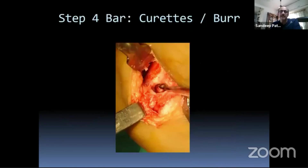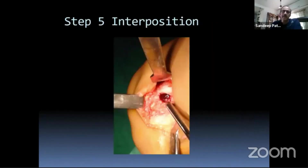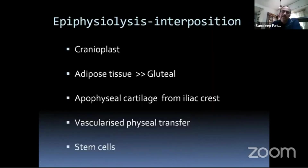A dental mirror, an arthroscope, and a SIAM are useful tools for proper visualization of your excision. In this example, the posterior bar was resected and we had good healthy cartilage all around. That was the burr and that was the SIAM image.